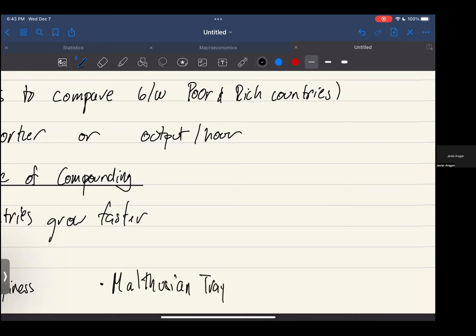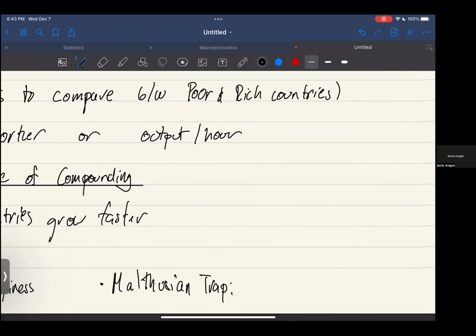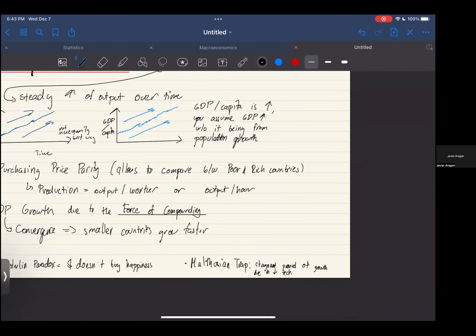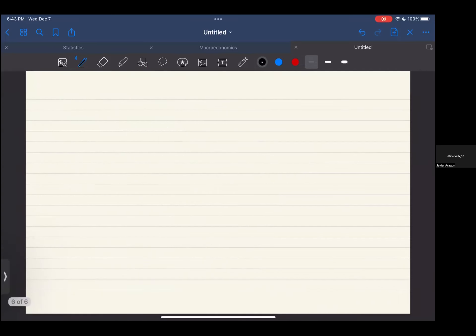And finally you have the Malthusian trap. The Malthusian trap means that there is a stagnant period of growth due to poor technology. That's all you have to know about the Malthusian trap. They don't go too much into depth and you shouldn't either.